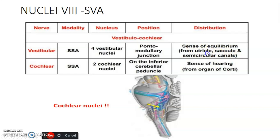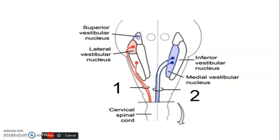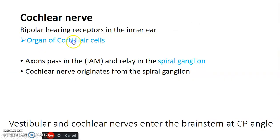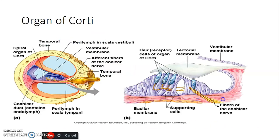The vestibular division senses equilibrium and carries information from the utricle, saccule, and semicircular canals — the balance receptors in the inner ear. The cochlear division senses hearing from the organ of Corti. The cochlear nerve is bipolar; axons from the organ of Corti hair cells pass through the internal auditory meatus and relay in the spiral ganglion, from which the cochlear nerve originates.